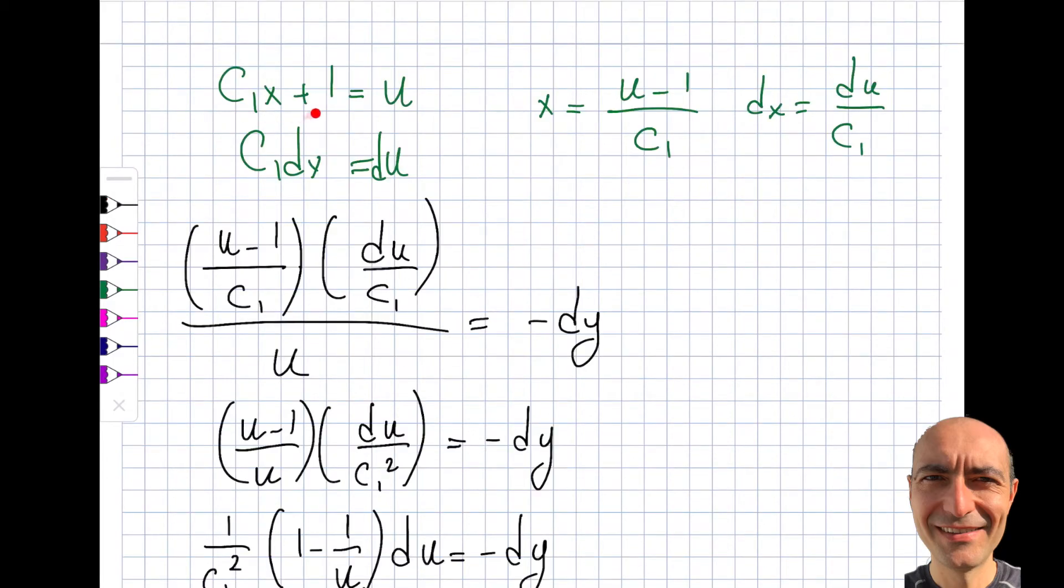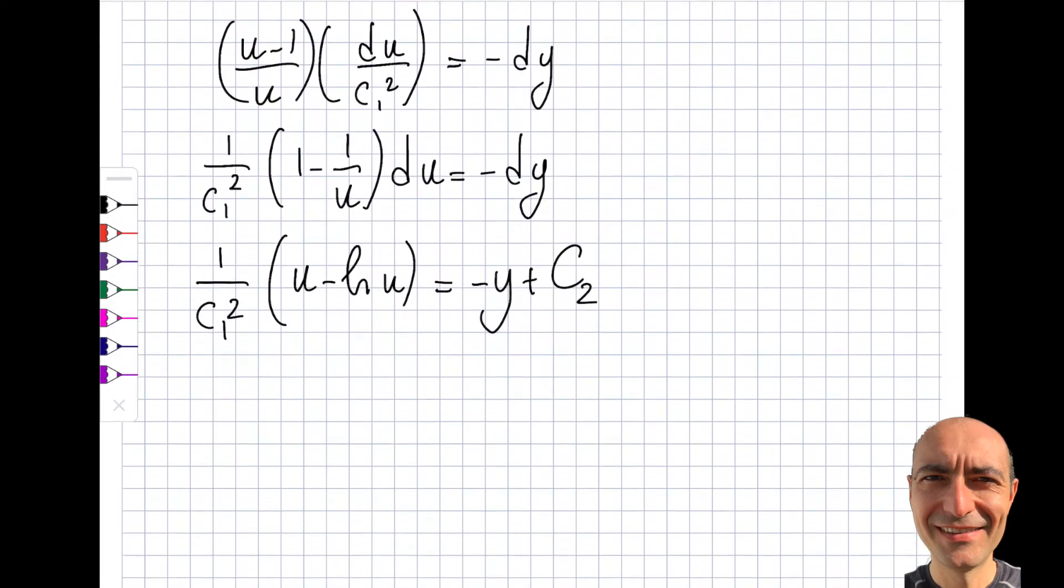So if I take the integral of both sides, then this 1 over c1 square will stay. Then I have, this becomes u minus ln u. Minus ln u is equal to minus y plus c2.